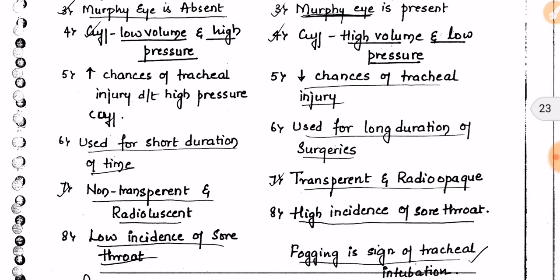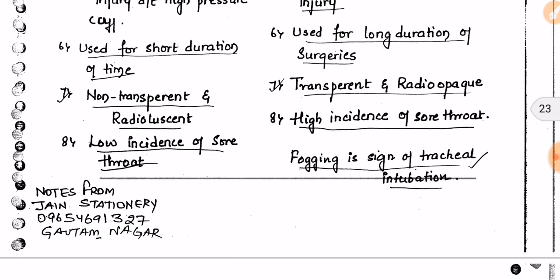Because of the high-volume, low-pressure cuff, PVC has decreased chances of tracheal injury. The red rubber tube is used for short duration, as longer use may lead to tracheal injury. For long-duration surgeries we use the PVC tube. The red rubber tube is non-transparent and radiolucent, whereas the PVC tube is transparent and radiopaque.